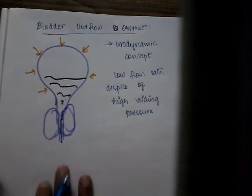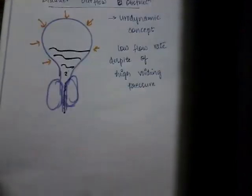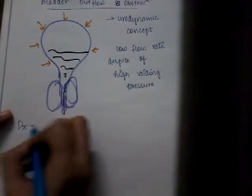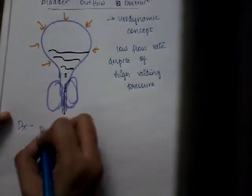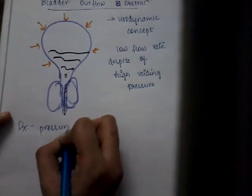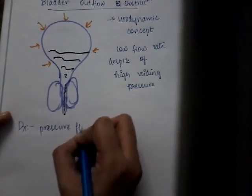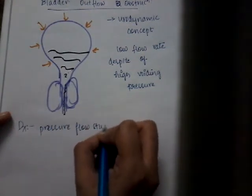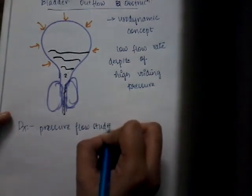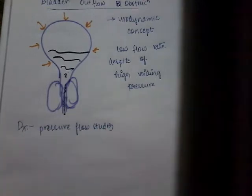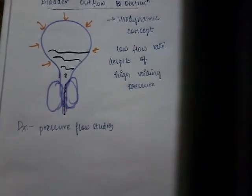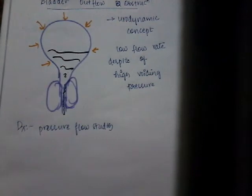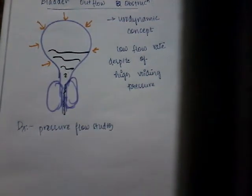The major way of diagnosing bladder outlet obstruction is pressure flow studies. Pressure flow studies are done to assess how much pressure the bladder generates during contraction, and we would also record the flow of urine during that time.